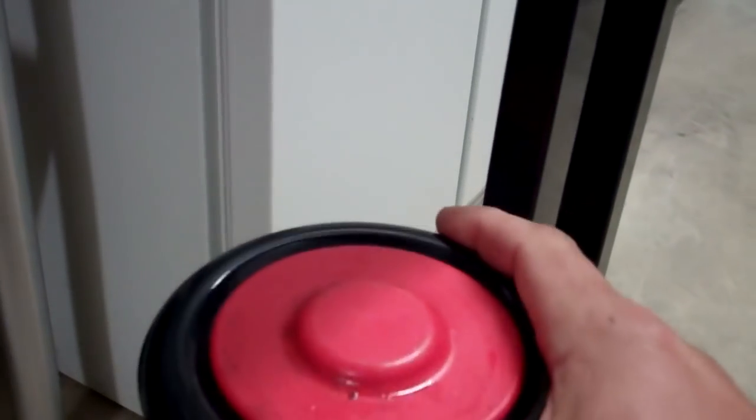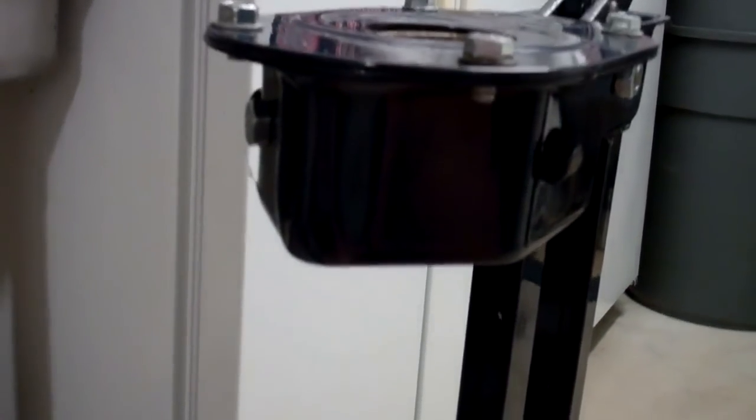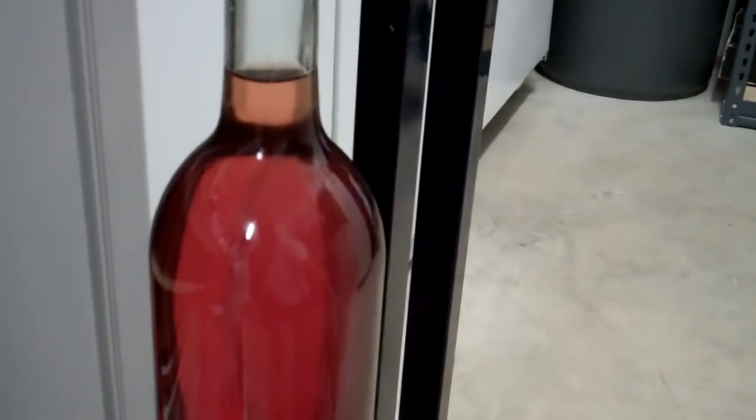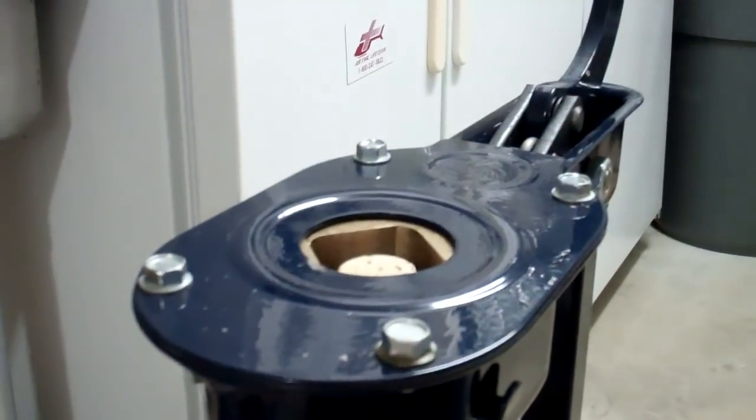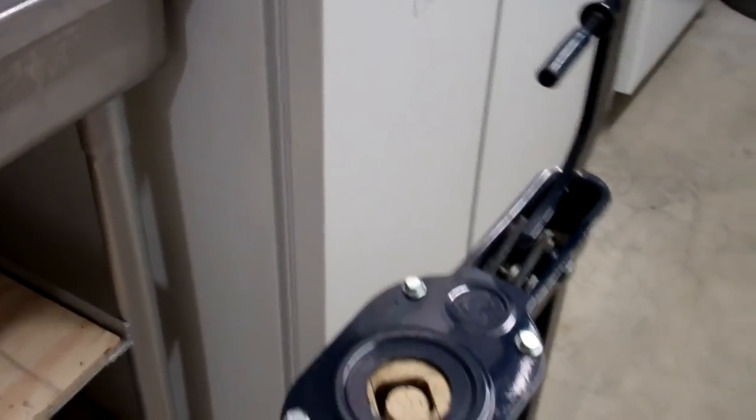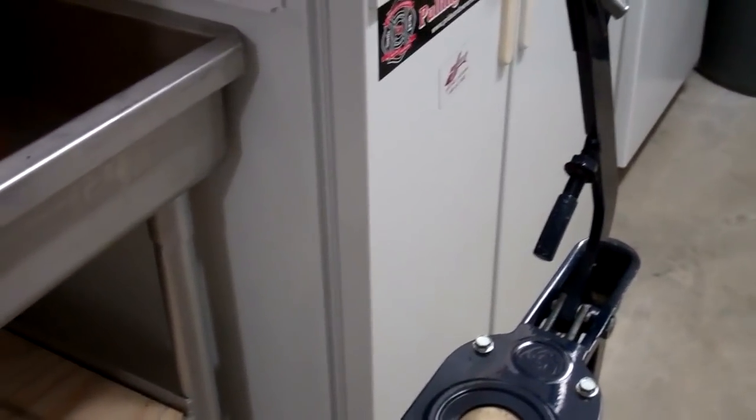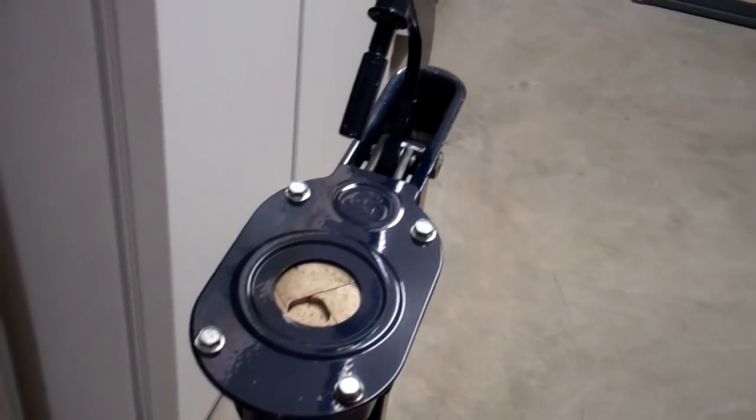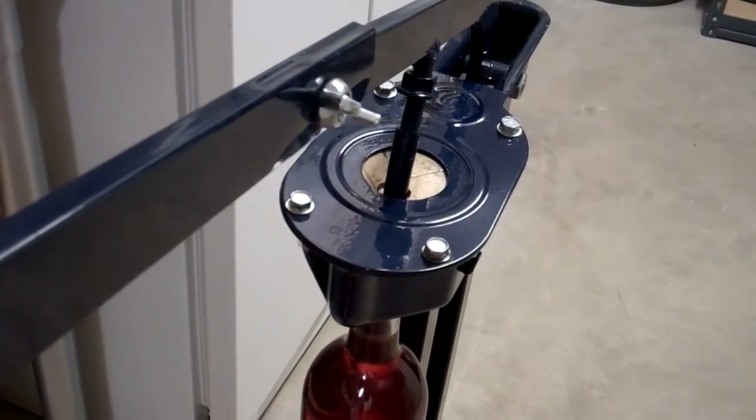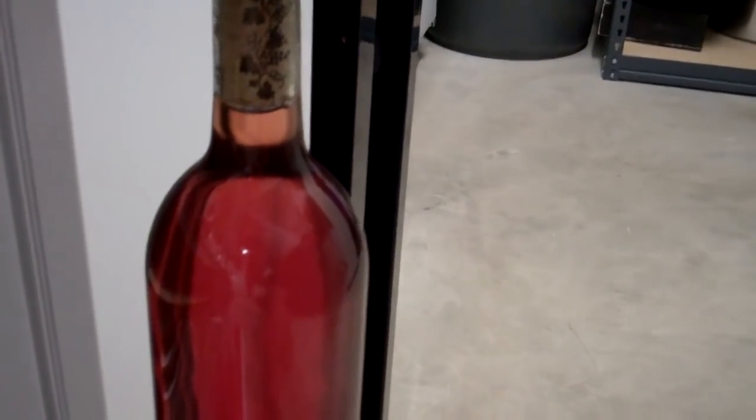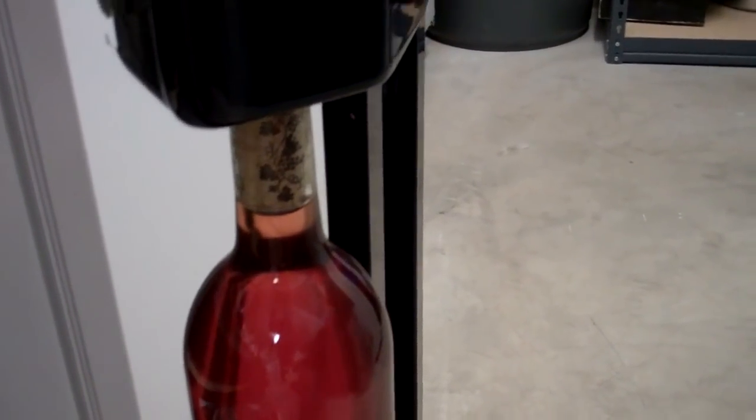The base here has a spring on it so you can push it down to stick a bottle in there. So take our bottle, stick it in there. Make sure the neck is lined up where it needs to be. Put our cork in the top. And then just pull on the lever. As you can see it's compressing the cork. The plunger is going to come down right into the bottle.